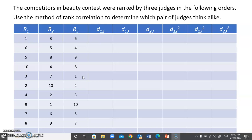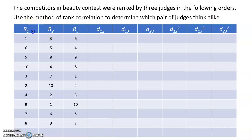There are three judges — J1, J2, J3 — and they have given certain ranks to the participants. In this question the ranks are given straight away. You can see my previous video where I explained how to assign ranks, which is important if the problem gives numerical scores rather than ranks directly.